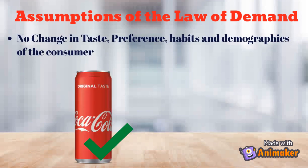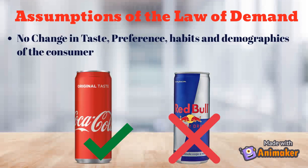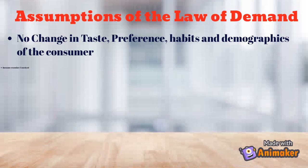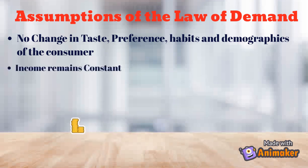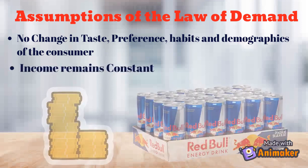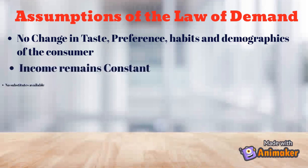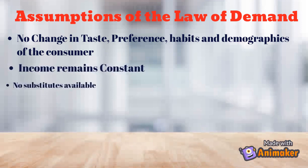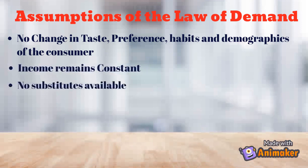That does not validate the law. Your income should also remain constant, because if my income changes I can buy more Red Bull cans. There should not be any substitutes available for the commodity — so for every McDonald's, there should be no Burger King available.